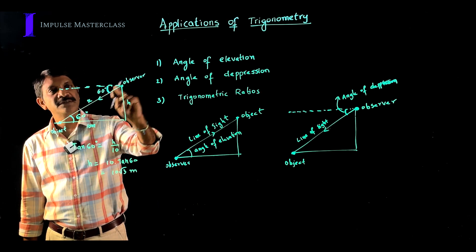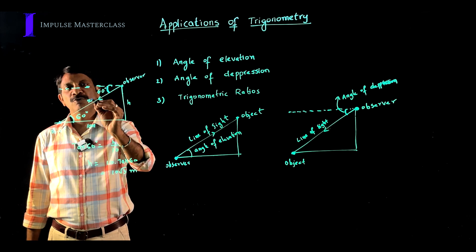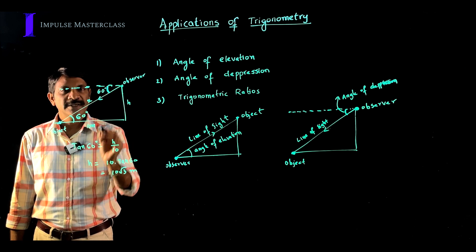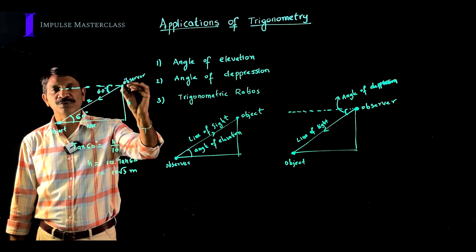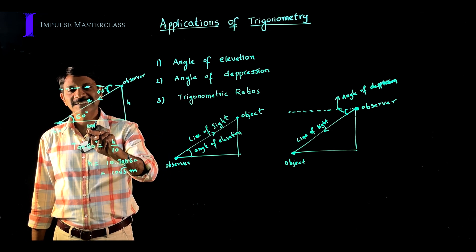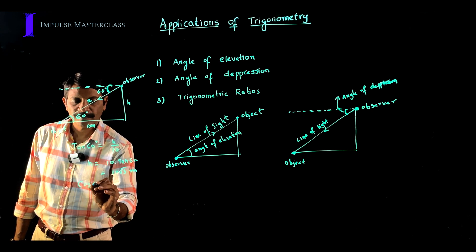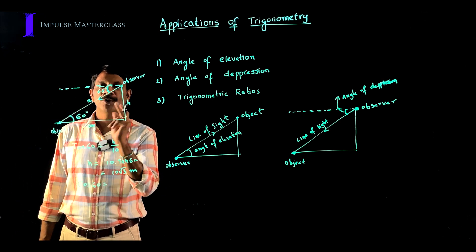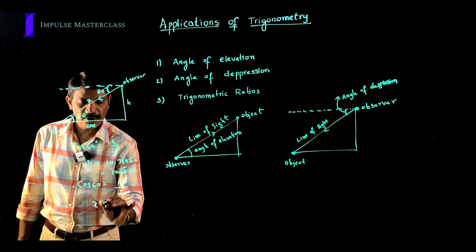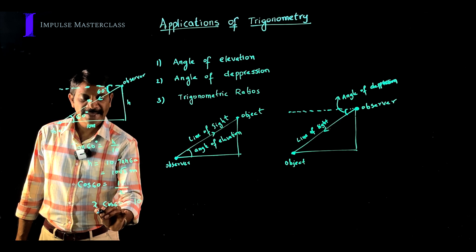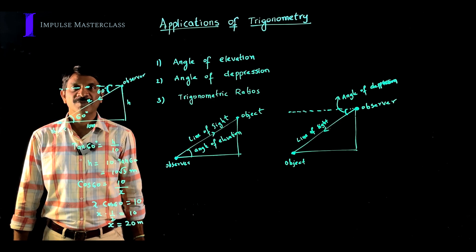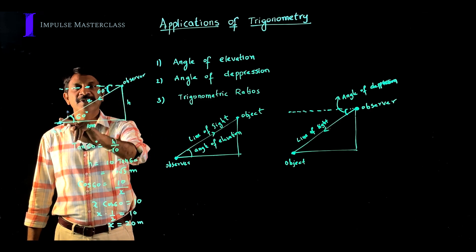We also need to find the distance x between the observer and the object. Since x is the hypotenuse, we need a trigonometric ratio involving the hypotenuse. Since the adjacent side is already given as 10, we use cos 60°. cos 60° = adjacent / hypotenuse = 10 / x. So x × (1/2) = 10, giving x = 20 meters. We have found both the height of the observer (10√3 m) and the distance between object and observer (20 m).